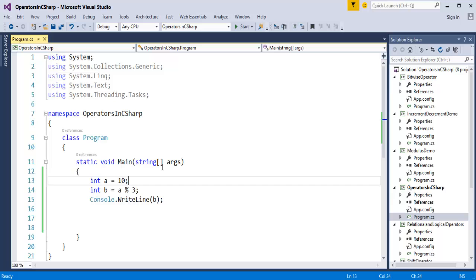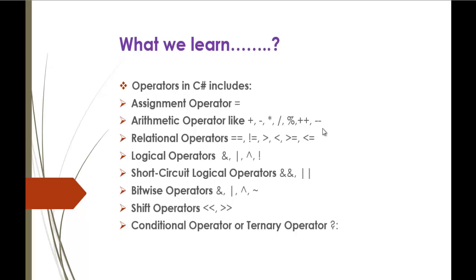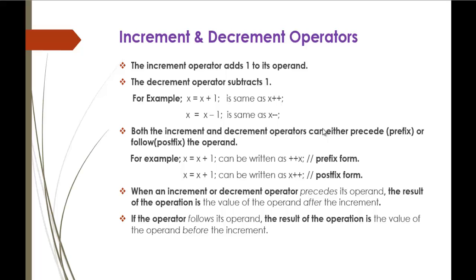The next operators are increment and decrement. The increment operator adds 1 to its operand, and the decrement operator subtracts 1 from the operand. For example, if x equals 10 and you want to increment it by 1, you can write x = x + 1, which is the same as x++. The output in both cases will be 11. Similarly, to decrement, use the double minus sign — x--.